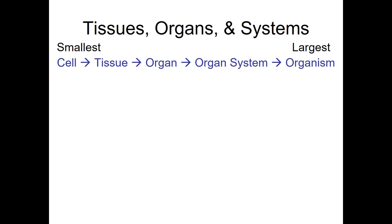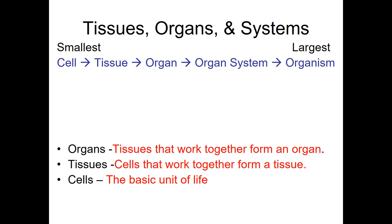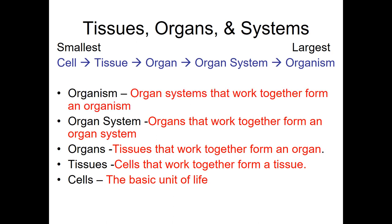To review: cells make tissues, tissues make organs, organs make organ systems, and organ systems make organisms. That's a little review for you — thanks for watching, and if you have any questions please let me know.